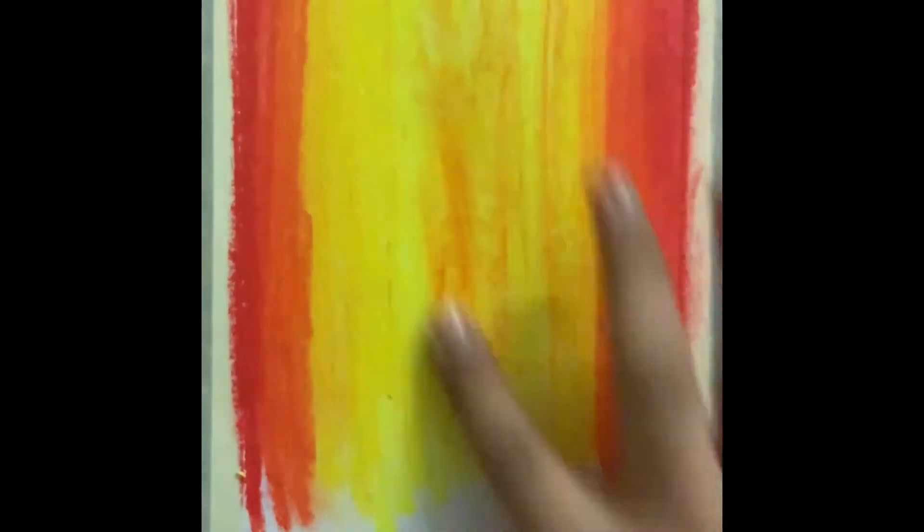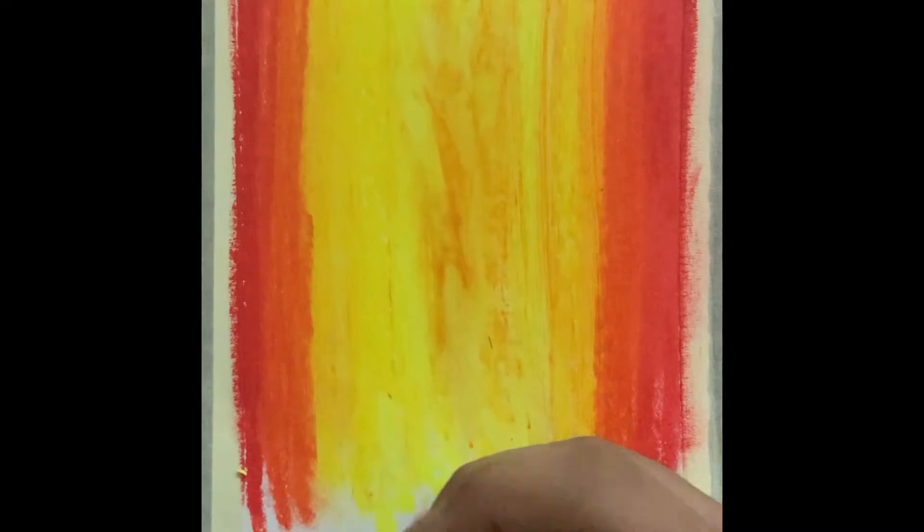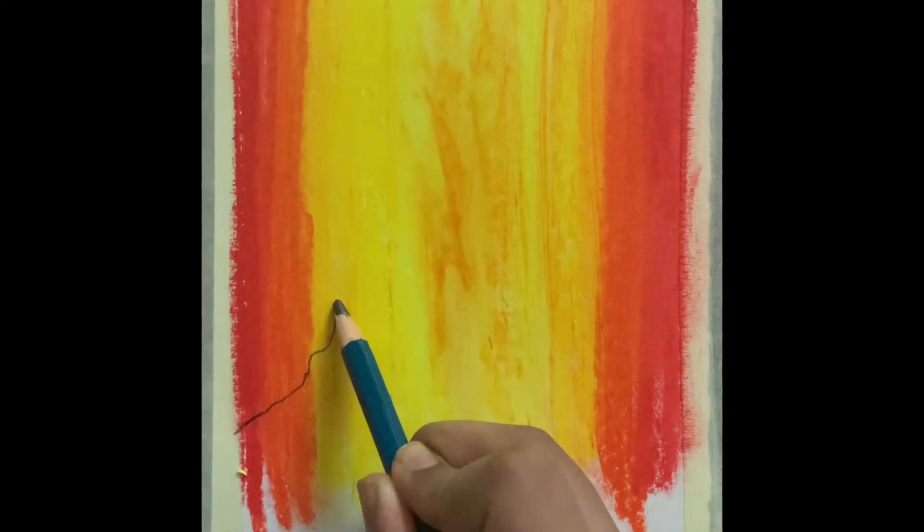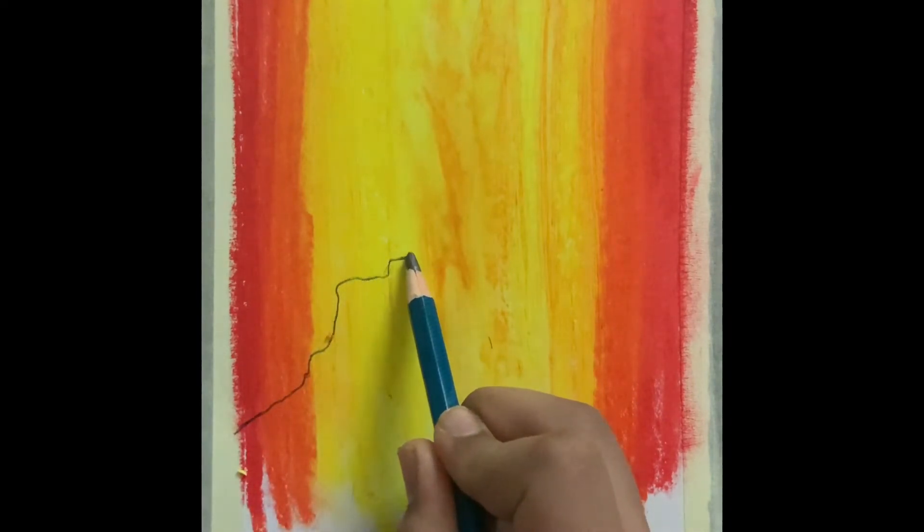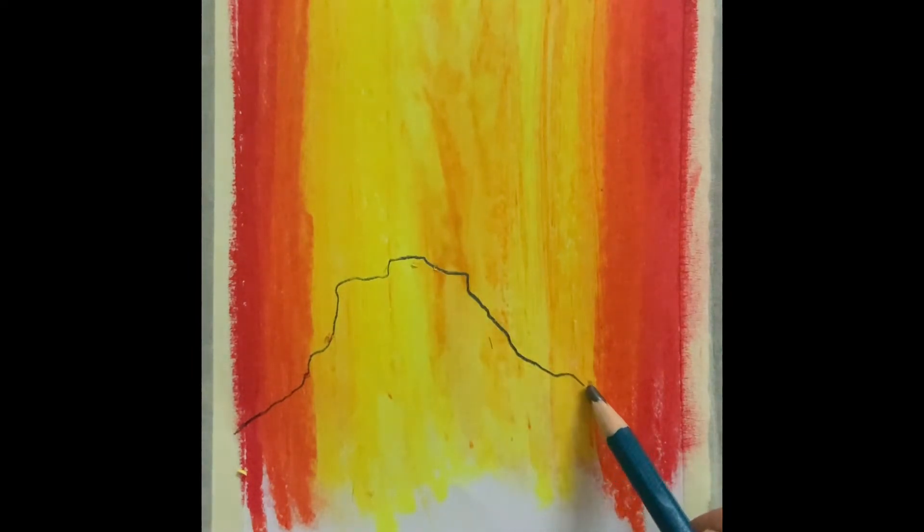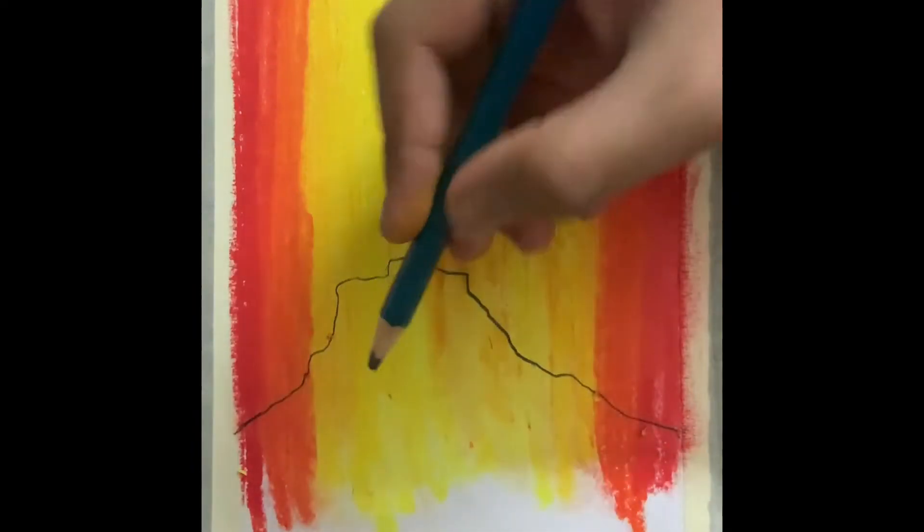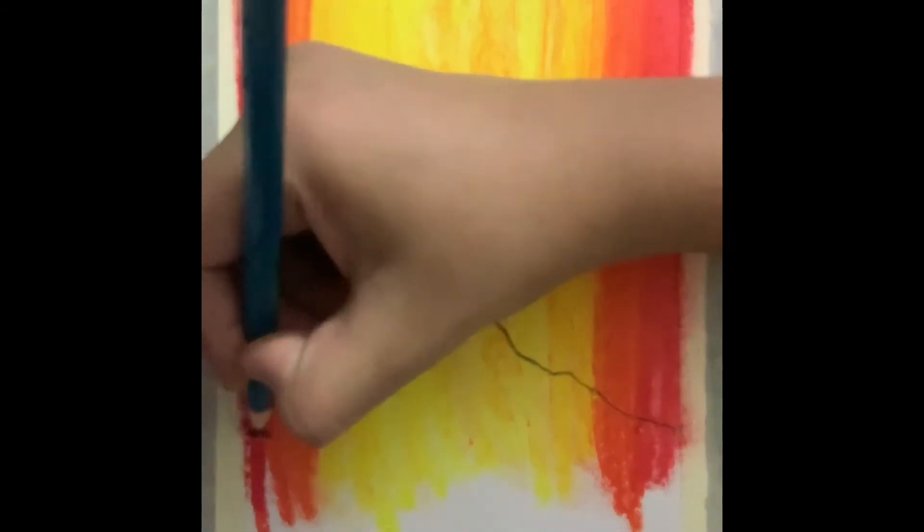So then you can, what you call, it looks a bit good. And then now take your 10B or 8B pencil and then just put the outline of the volcano. Actually, I'm doing like a mountain. It's fine now. Now just with that I'll do.